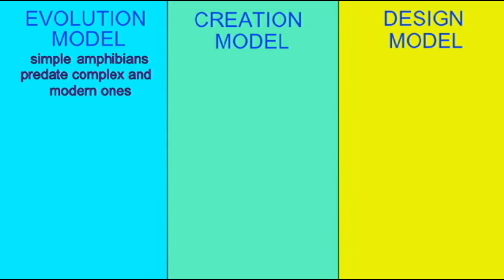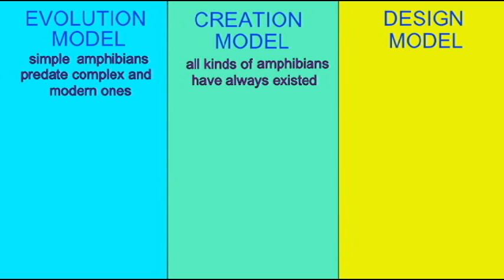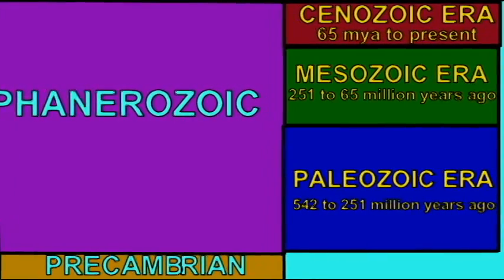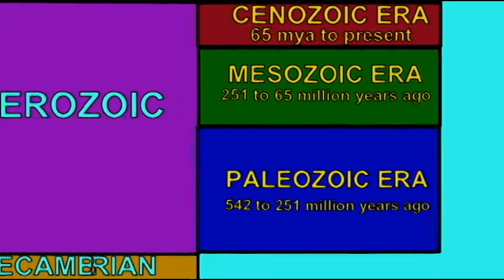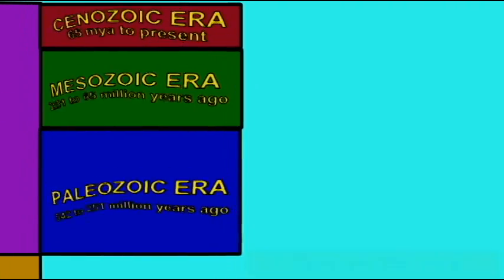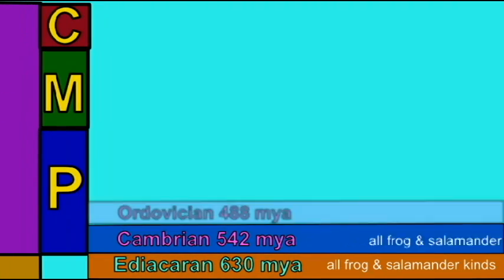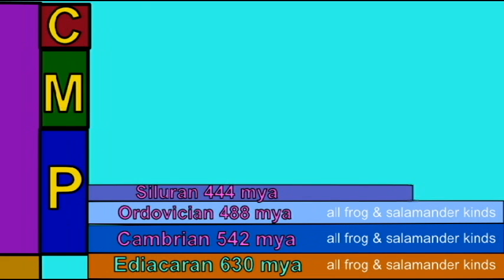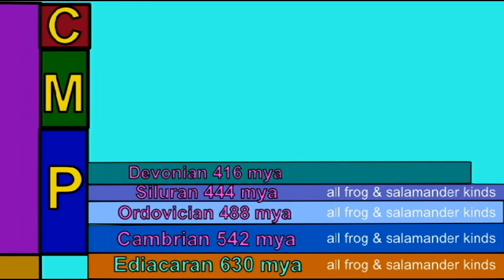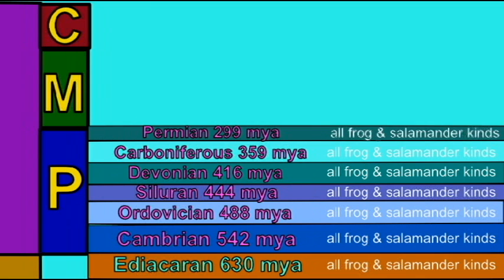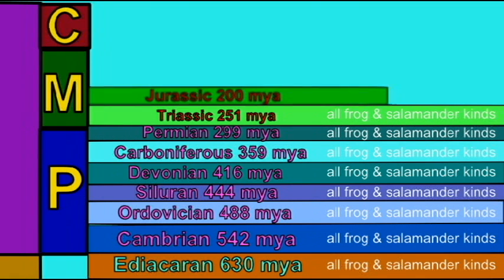The creationist model instead claims that all modern kinds of amphibians have always existed. If the creationist model is true, every modern kind of frog and salamander has always existed. This means that when the Ediacaran rocks were laid down at some point in Earth's history, all frog and salamander kinds existed.